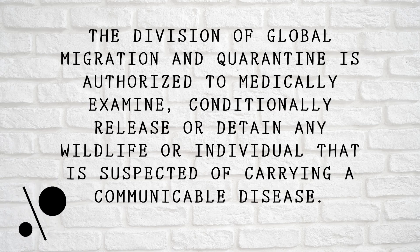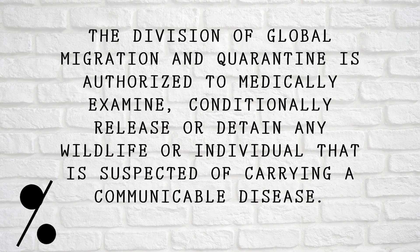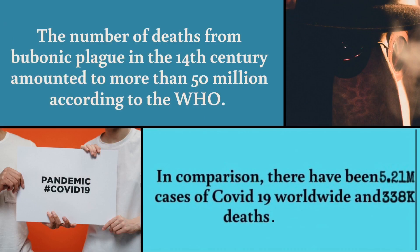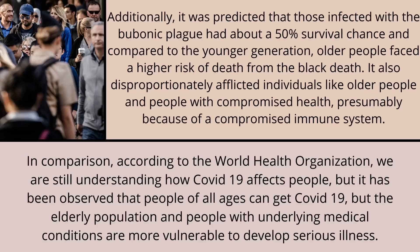This division is authorized to medically examine, conditionally release, or detain any wildlife or individual suspected of carrying a communicable disease. So how does the pandemic of COVID-19 compare to the bubonic plague of the 14th century? The number of deaths from bubonic plague in the 14th century amounted to more than 50 million, according to the WHO. In comparison, there were 5.21 million confirmed cases of COVID-19 worldwide and 338,000 deaths as of May 22, 2020. It was predicted that those infected with the bubonic plague had about a 50% survival chance, and older people faced a higher risk of death from the Black Death.